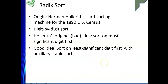Radix sort was originally started by Harmon for card sorting machines in the year 1890. It is based on digit-by-digit sorting. The original idea was to sort starting from the most significant digit first, but later it was understood that the better idea is to start from the least significant digit first.